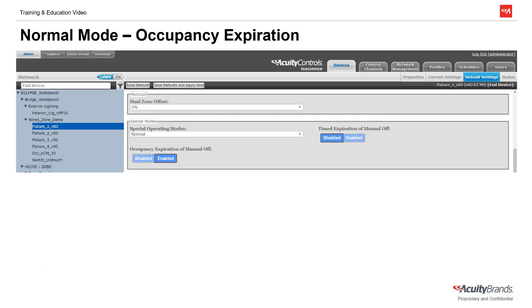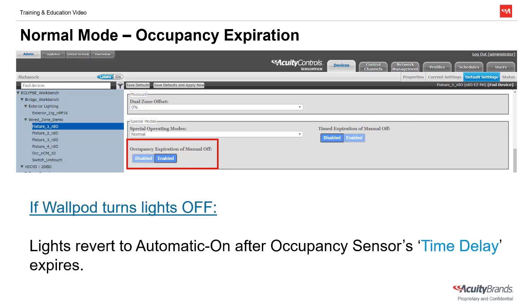In normal mode, when a switch is used to turn the lights off, the sub-settings Occupancy Expiration of Manual Off and Timed Expiration of Manual Off will dictate if and how the lights will revert to an automatic on state. With Occupancy Expiration of Manual Off enabled — which is the factory default setting — the lights will reset to automatic on when the occupancy sensor's time delay expires, or in other words, when the room becomes vacant. For example, if the lights are manually turned off with the switch and the occupancy sensor time delay is set to 10 minutes, after 10 minutes of nobody being in the room, the lights would automatically turn on when someone enters. If someone leaves and comes back within 10 minutes, they will need to use the switch to turn the lights back on.